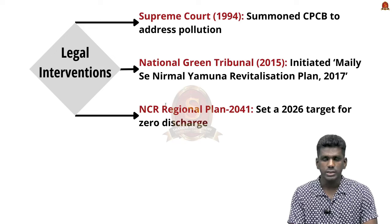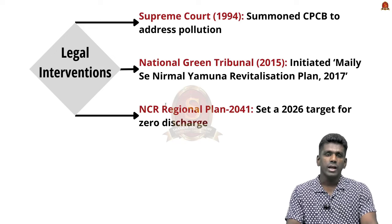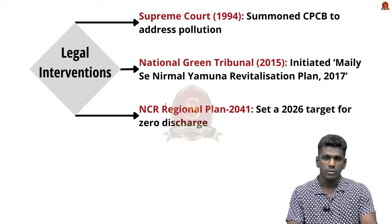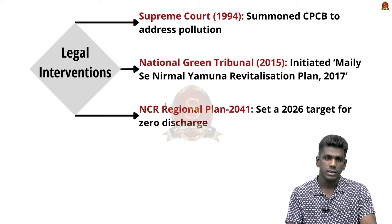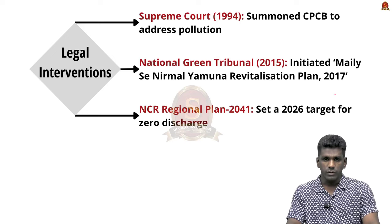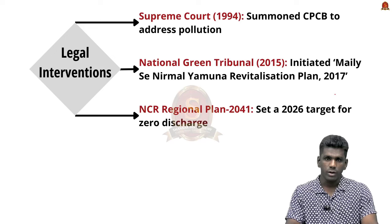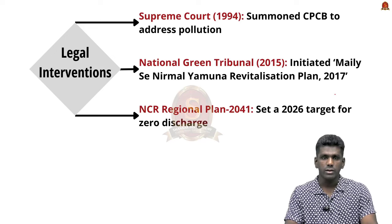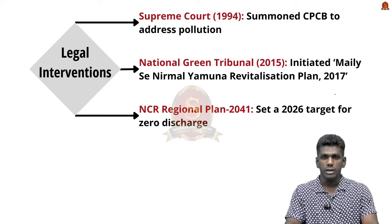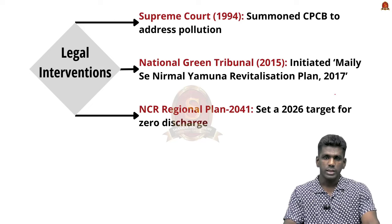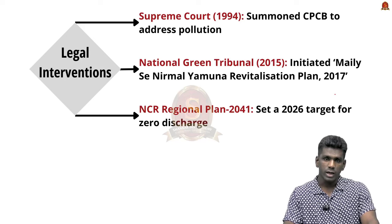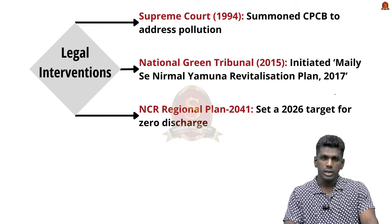Let us discuss some important cases regarding Yamuna River pollution. In 1994, the Supreme Court summoned the Central Pollution Control Board to address the gaps in cleaning the Yamuna River, involving Delhi, Uttar Pradesh and Haryana governments. The National Green Tribunal in 2015 initiated the Malesa Nirmal Yamuna Revitalization Plan 2017, aimed at cleaning the river by 2017, which was not fully achieved. The NCR Regional Plan 2041 set a revised target of 2026 to achieve zero discharge of untreated sewage and industrial waste into Yamuna.